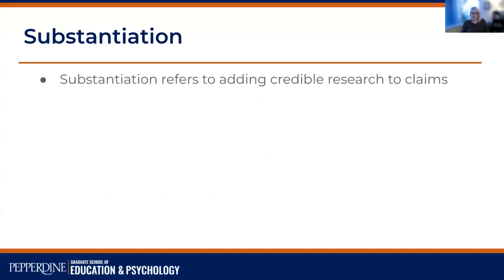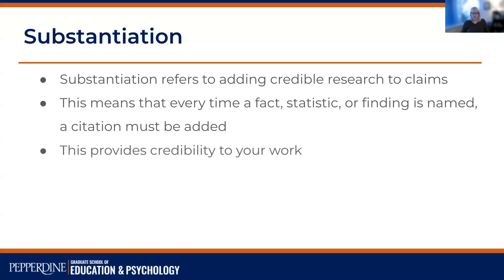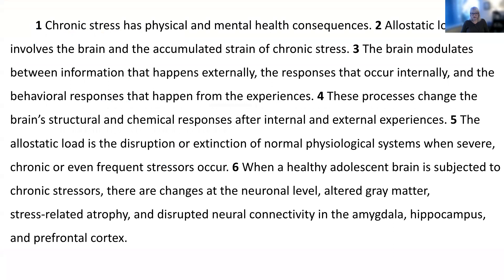The last thing I'd like to introduce as a principle for incorporating research into your writing is the idea of substantiation. Substantiation refers to adding credible research to claims. This means that every time a fact, statistic, or finding is mentioned in your writing, a citation must be added — this provides credibility to your work.